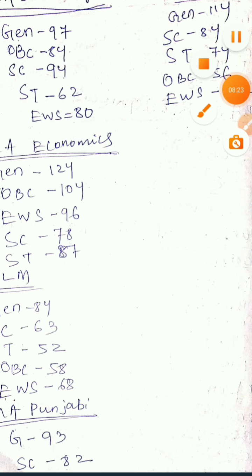Next, for MA Psychology: the General mark required to get a seat in Central University of Punjab is 180, SC is 150, ST is 120, and EWS is 112.